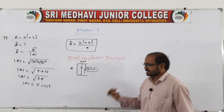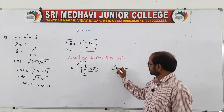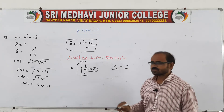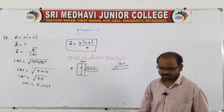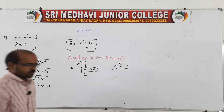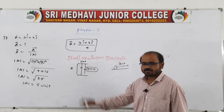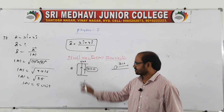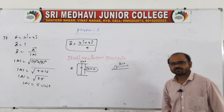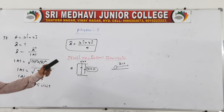Another example: if a body moves with uniform velocity, there is no change in velocity, so the acceleration vector equals zero. These are examples of null vectors — a vector whose magnitude equals zero.